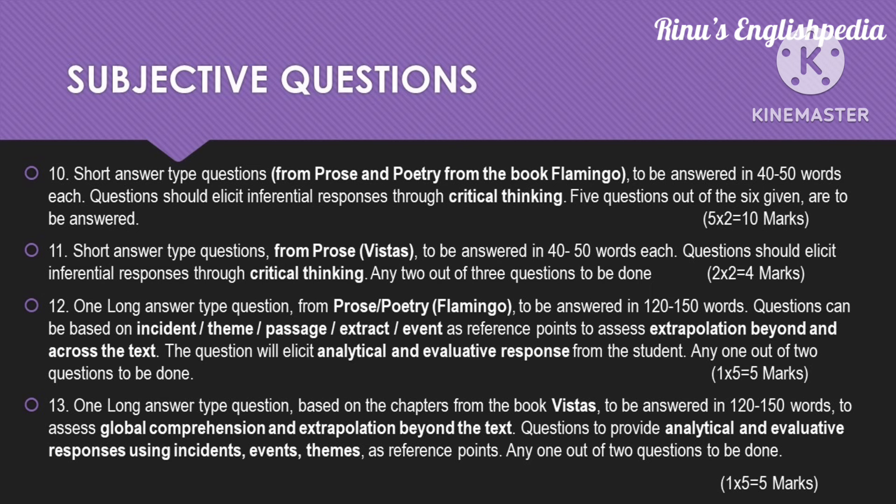Question 12 is a long answer type question from the book Flamingo — it can be from either prose or poetry. Two questions will be asked and you have to attempt any one. The word limit is 120 to 150 words. The question can be based on an incident, theme, or extract — it involves extrapolation beyond and across the text. Your answers should be analytical and evaluative, and it is worth five marks.